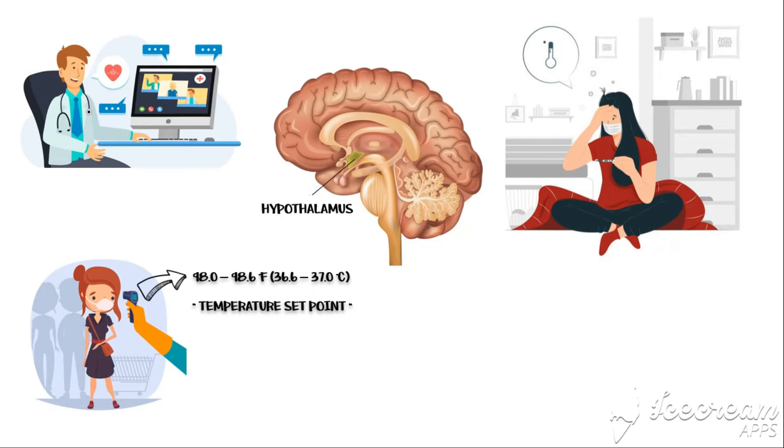The hypothalamus is the principal thermoregulator in our body. It maintains the temperature set point at the above constant range by keeping a balance between heat producing and heat losing mechanisms.